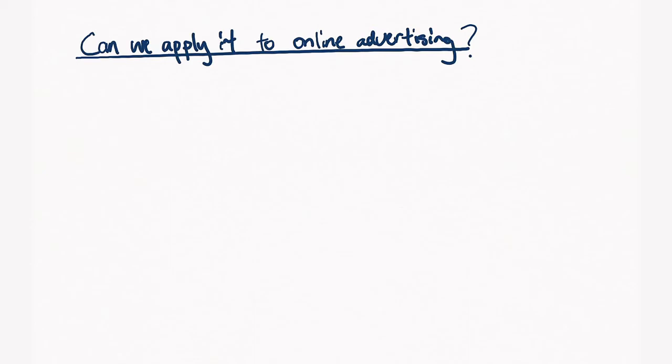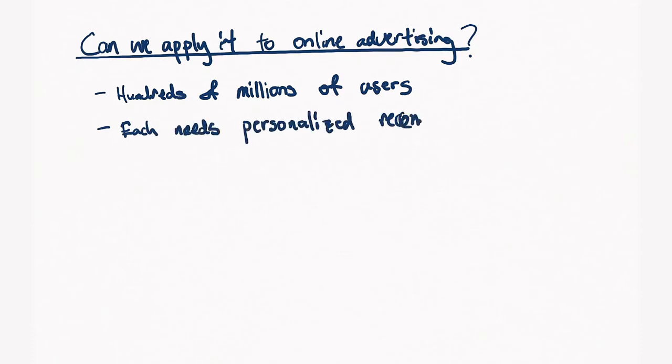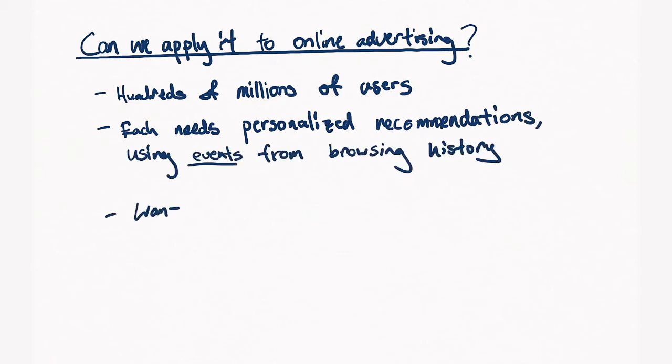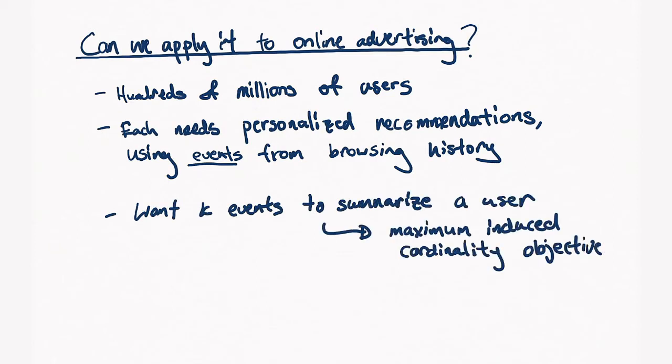So, when we first thought about this problem, we were coming from the viewpoint of online advertising. We were thinking from the perspective of a large-scale advertising network. So, can we apply it to online advertising? Well, from the online advertising perspective, we have hundreds of millions of users surfing the web at any given time, and each needs personalized recommendations based on their browsing history. So, we wanted to see if we could optimize a maximum induced cardinality objective. We wanted k events to summarize a user.